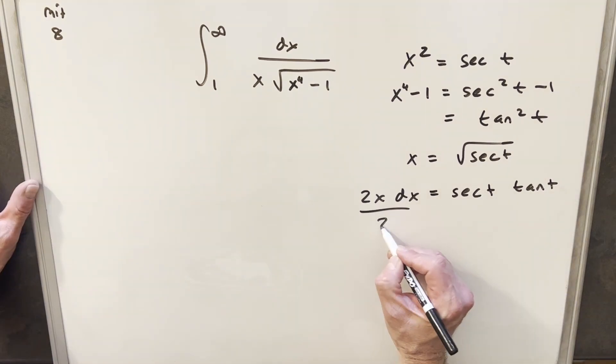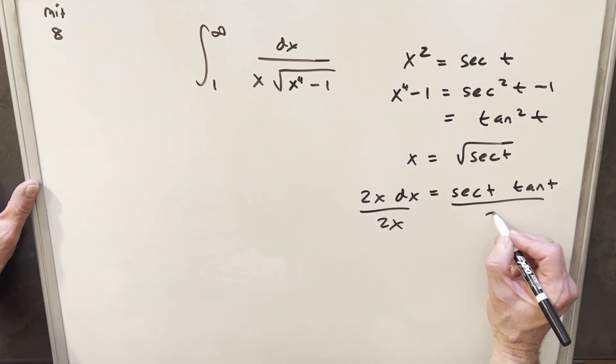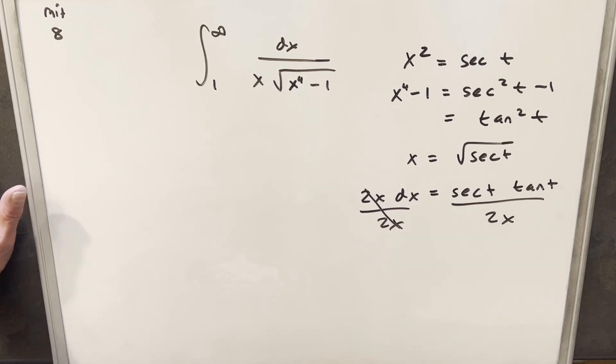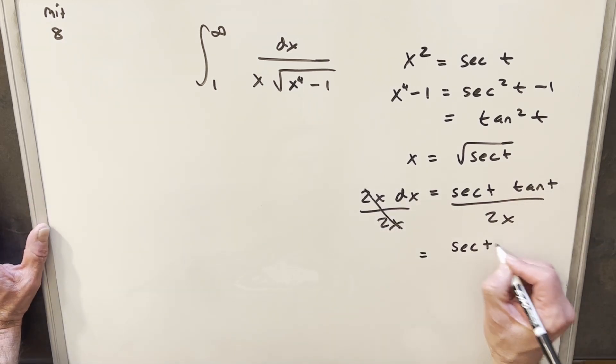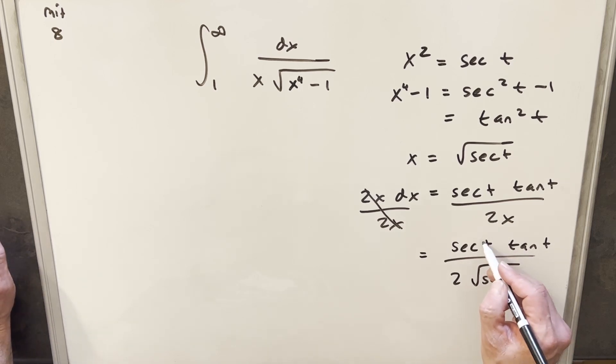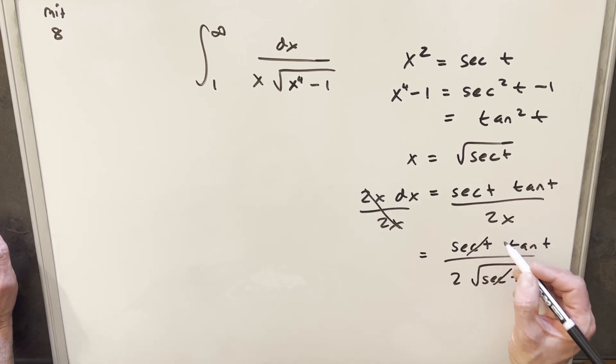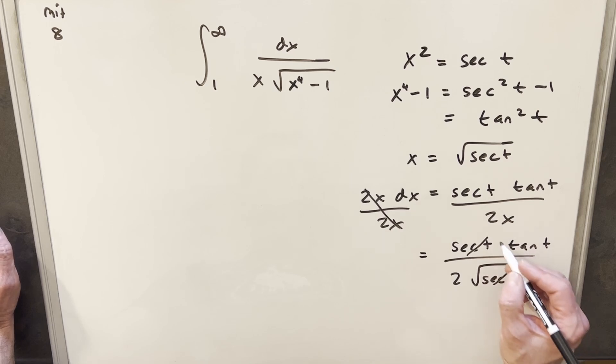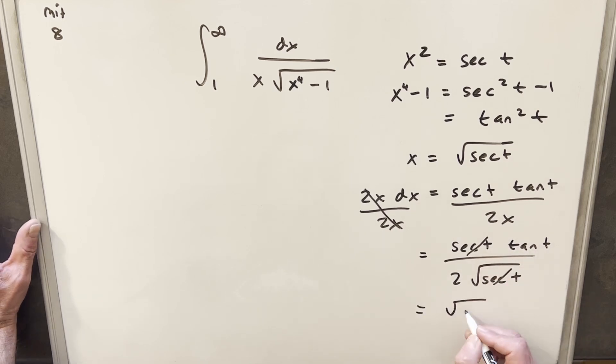But then I want to solve for dx so we're just going to divide by 2 over x on both sides. So with this value for x I'll rewrite this as secant t tan t over 2 times square root of secant t. But then we can just simplify this and write it as square root here. So let's just rewrite this. This is going to be square root of secant t tan t over 2.